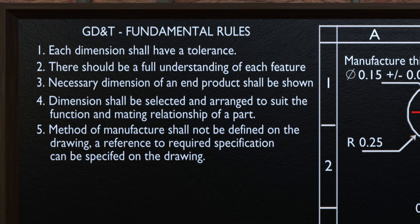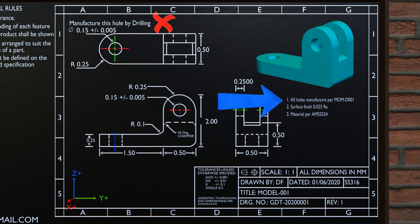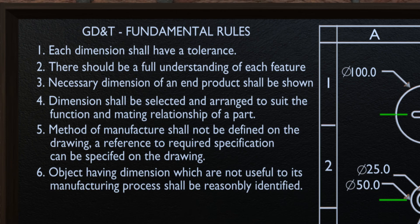As per the fifth fundamental rule, the method of manufacture should not be defined on the drawing, though a reference to the required specification can be specified. Consider this dimension — we can see that the method of manufacture is specified next to it, which is not a good practice per this fundamental rule. When there is a need to mention the method of manufacture, then it should be mentioned in the comments section of the drawing.